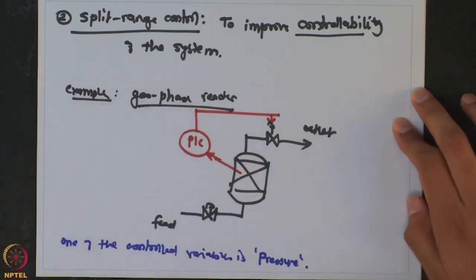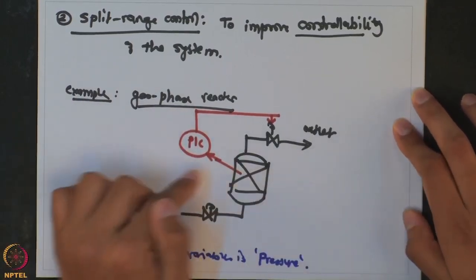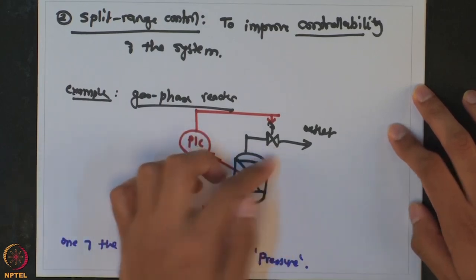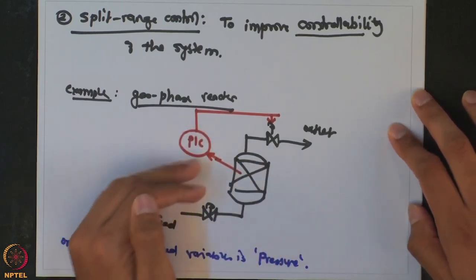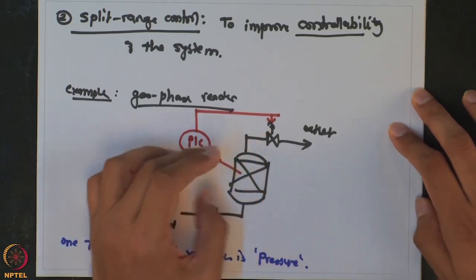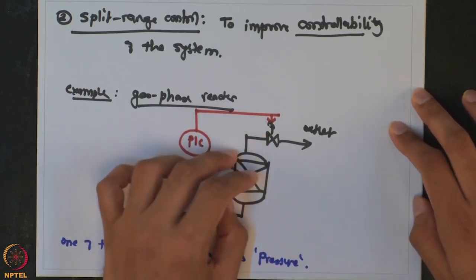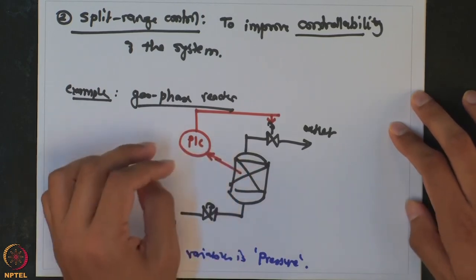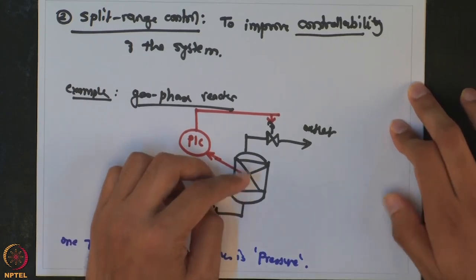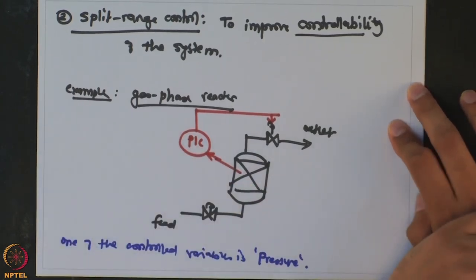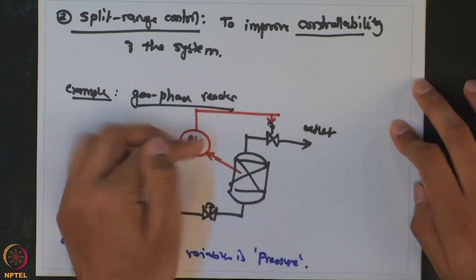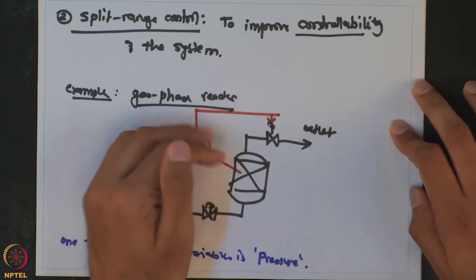Under normal circumstances, this pressure controller works as follows: if the pressure slightly goes above the value, the outlet valve will open; if the pressure starts to drop, you close the outlet valve so the vapor inventory inside the reactor is maintained. Now let us consider an abnormal situation where the reactions inside the reactor go into a runaway, generating a lot of vapor and causing the pressure to keep increasing.